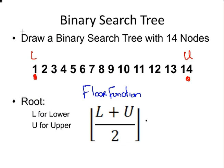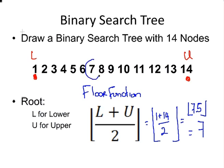Now, the floor function of 1 plus 14 all over 2, that is the floor of 7.5, and that's equal to 7. So the seventh node is the root of the tree overall. Okay, so we've identified the root of the tree.